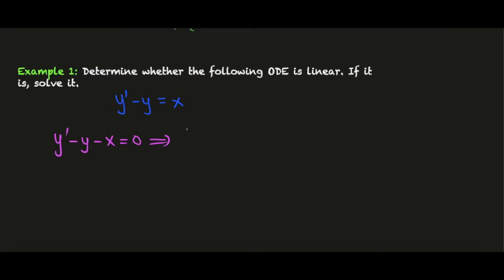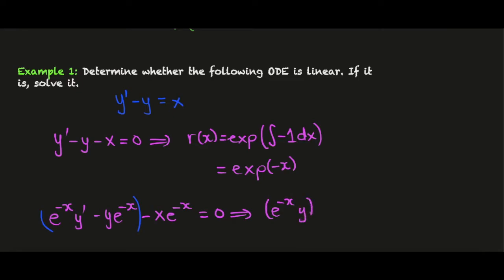In that case we find that the integrating factor is given by the exponential of the integral of minus 1 dx, and so we end up with e to the minus x as this integrating factor. Now the reason why we don't have a constant is because we're going to multiply through and if we add an additional constant we could just divide that out. If we now multiply everything by e to the minus x, we'll have e to the minus x y' minus y e to the minus x minus x e to the minus x equals 0.